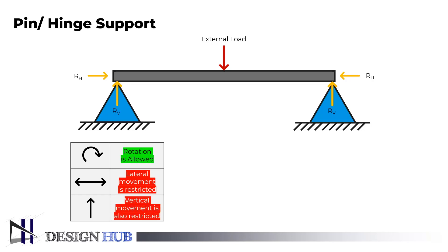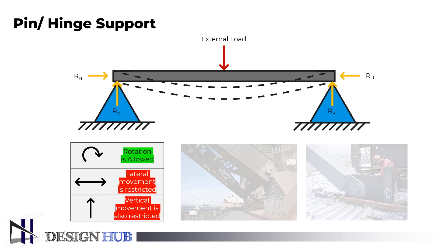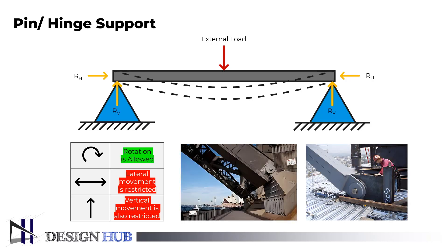As a result, it responds to the applied force in two different ways, horizontally and vertically. Since the pin support allows for rotation, the value of the bending moment will be zero there. This is how pin support is typically represented in mechanics. Bridges and trusses also use this type of support.